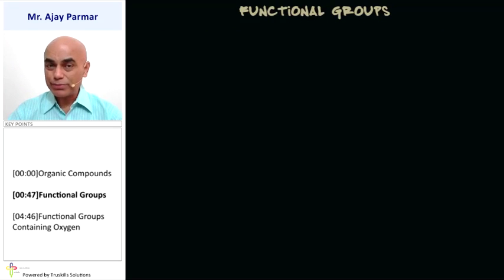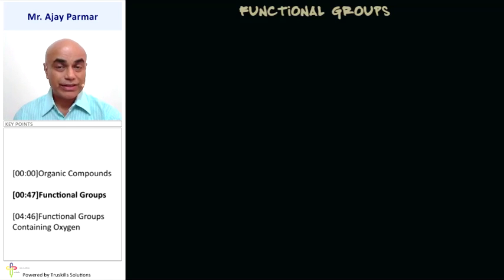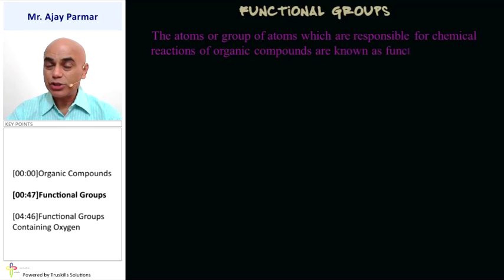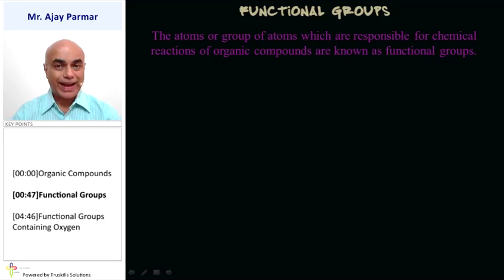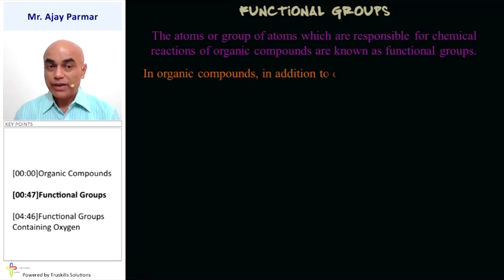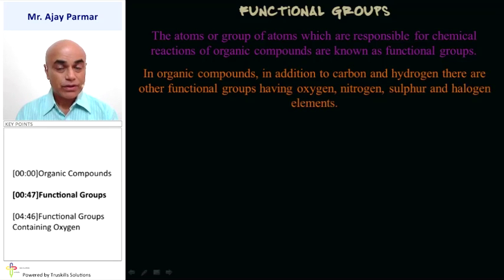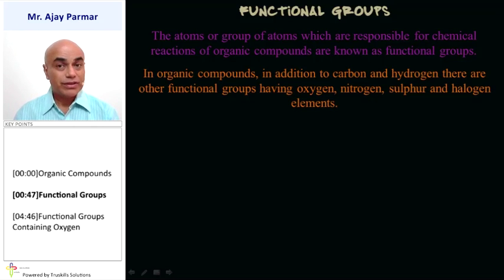It is the presence of these types of compounds which decides what type of organic compound it is, and that is the functional group. The atom or the group of atoms which are responsible for the chemical reactions and chemical properties of the organic compounds are considered to be the functional groups. In organic compounds, in addition to carbon and hydrogen, some functional groups which might contain oxygen, nitrogen, sulfur, and halogens may be present.